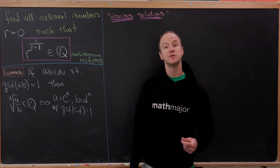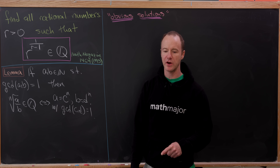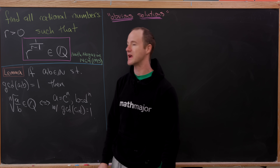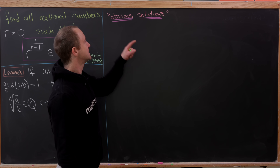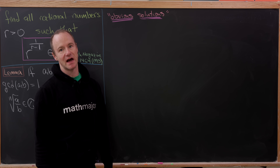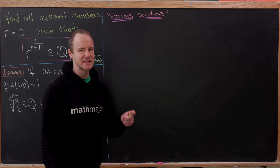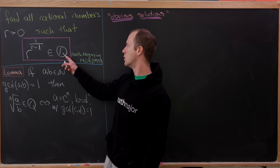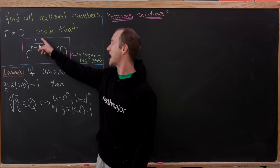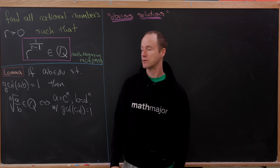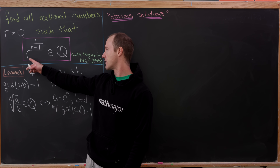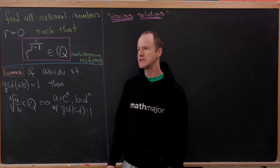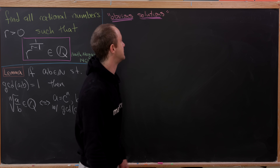Now moving on to the main problem: we want to know which rational numbers r give another rational number via this construction. The first thing to do is look for obvious cases where this happens, then prove that obvious case is really the only case. What if the exponent were an integer? If 1 over r minus 1 is an integer, then raising any rational number to an integer power gives a rational number.